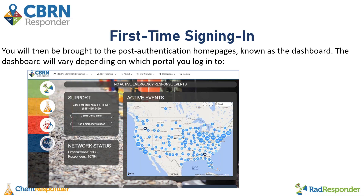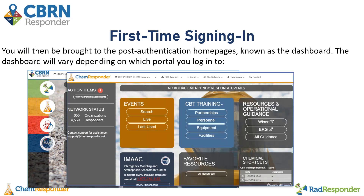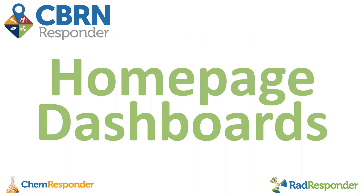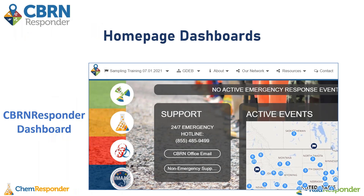This is the CBRNResponder post-authentication homepage, this is the ChemResponder post-authentication homepage, and this is the RADResponder post-authentication homepage. We'll talk a little bit about these homepage dashboards and what the most important elements of each of them are.